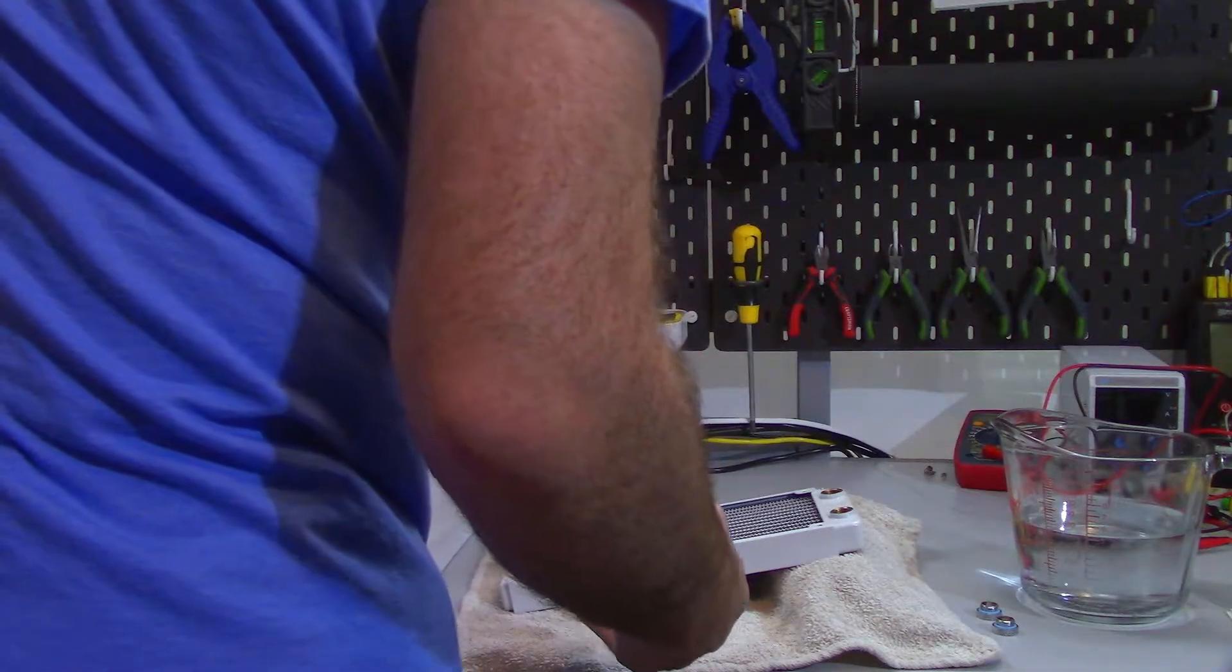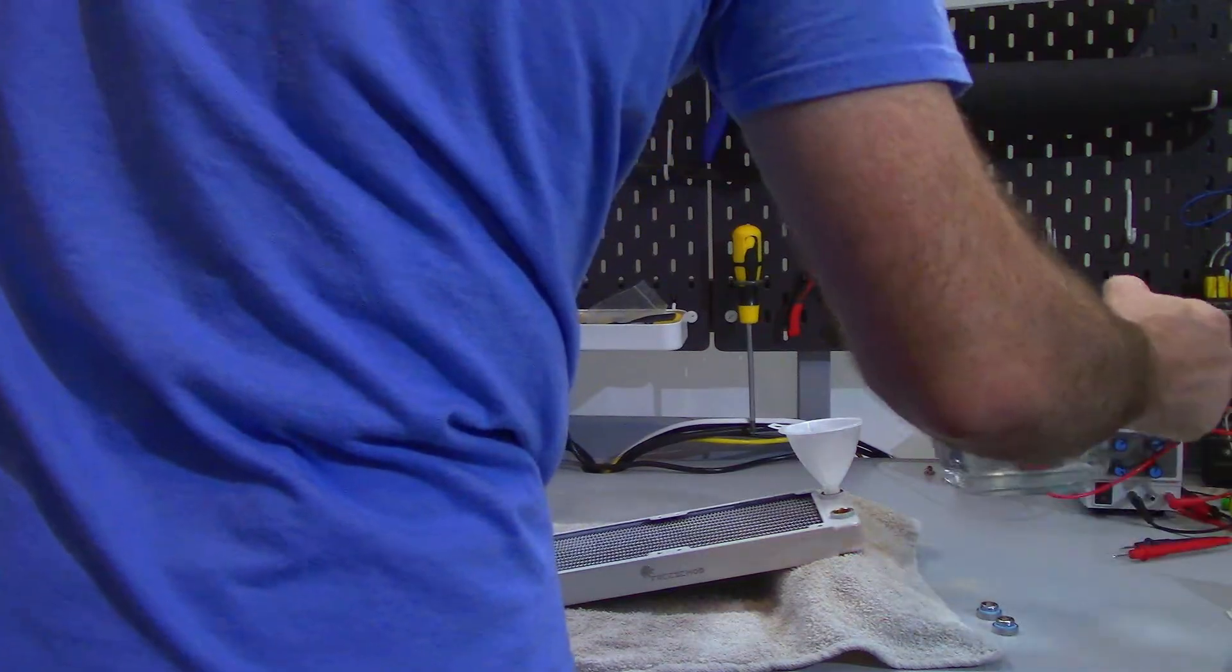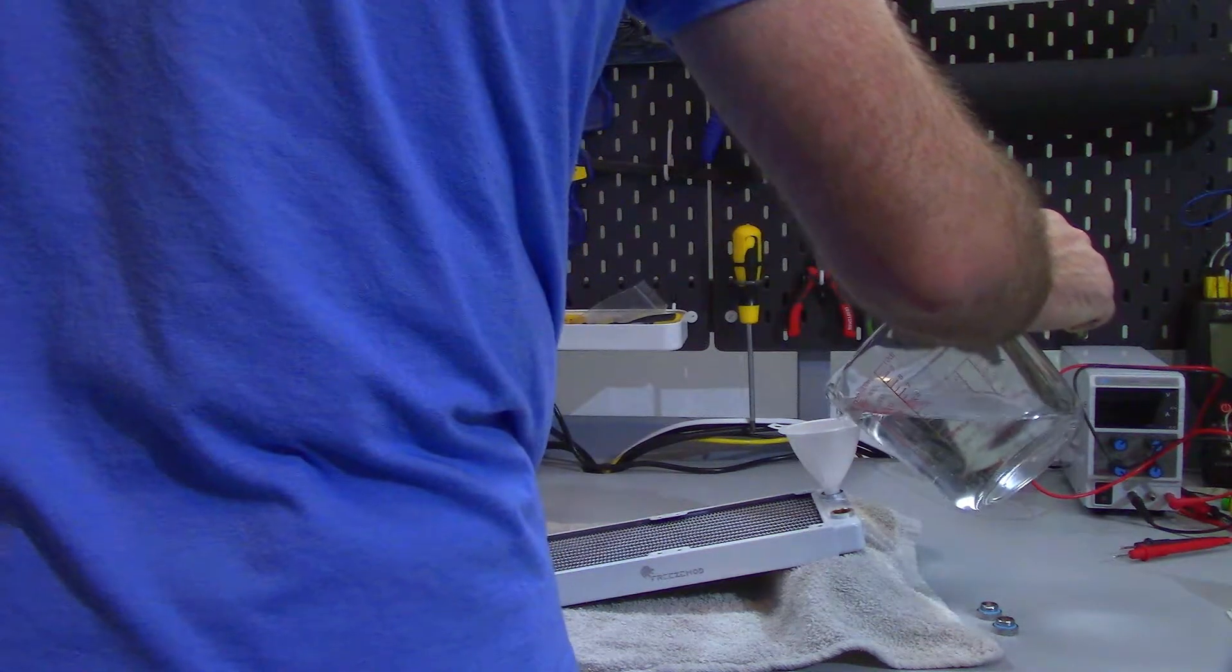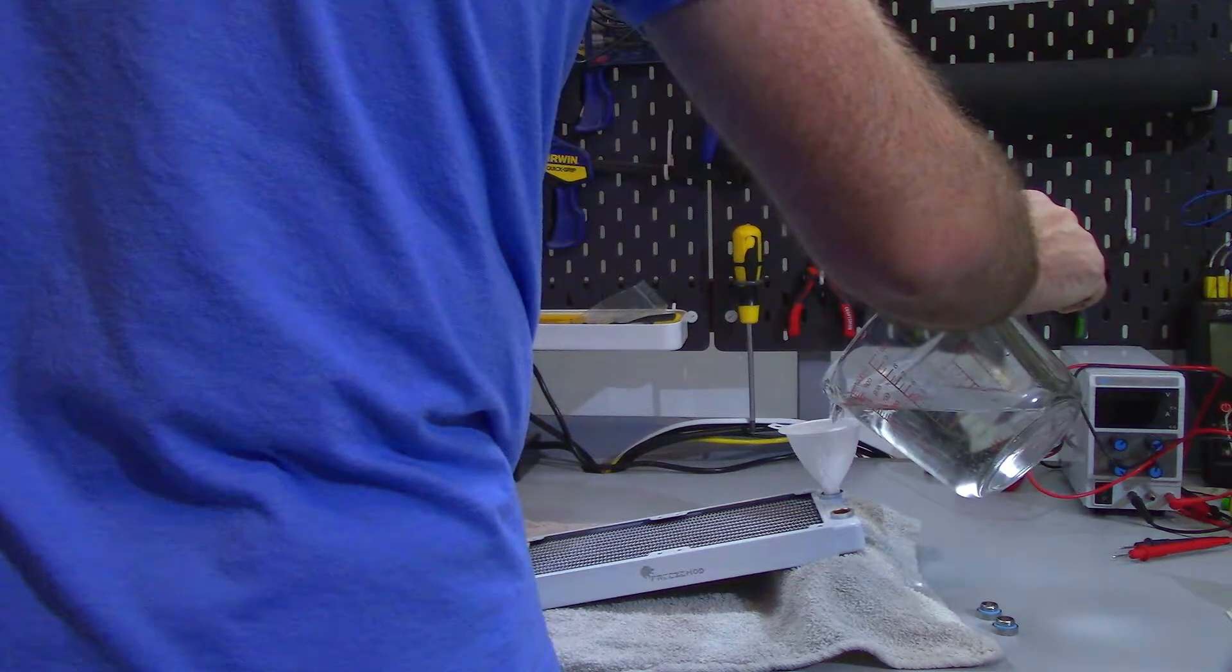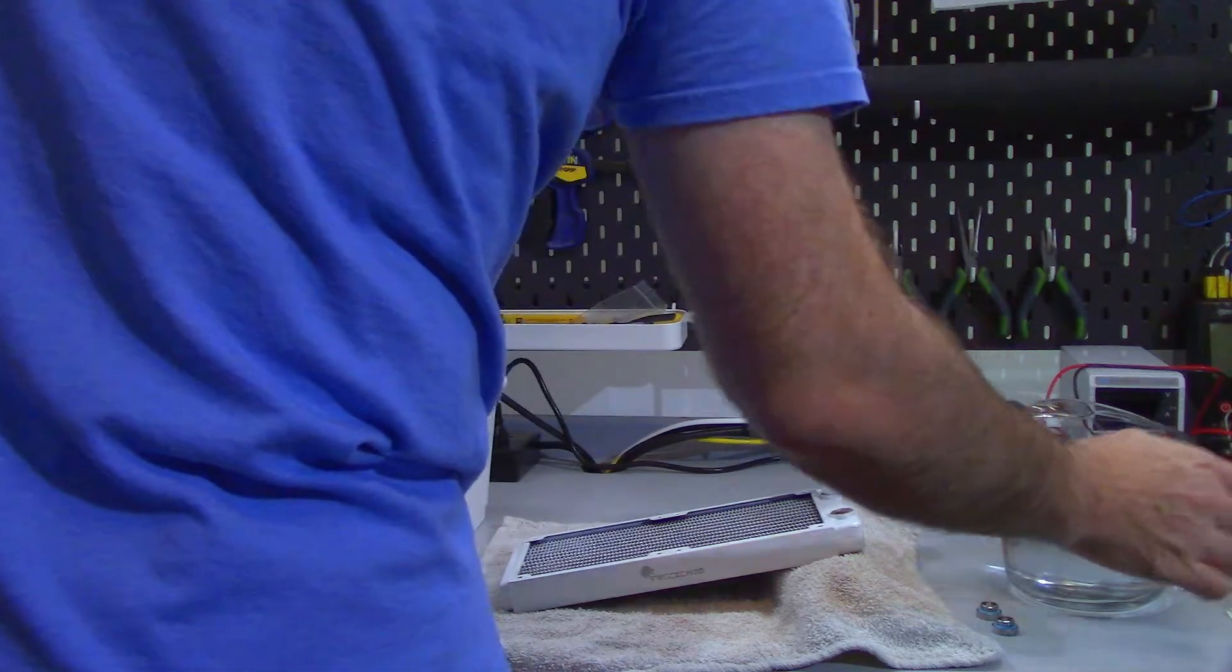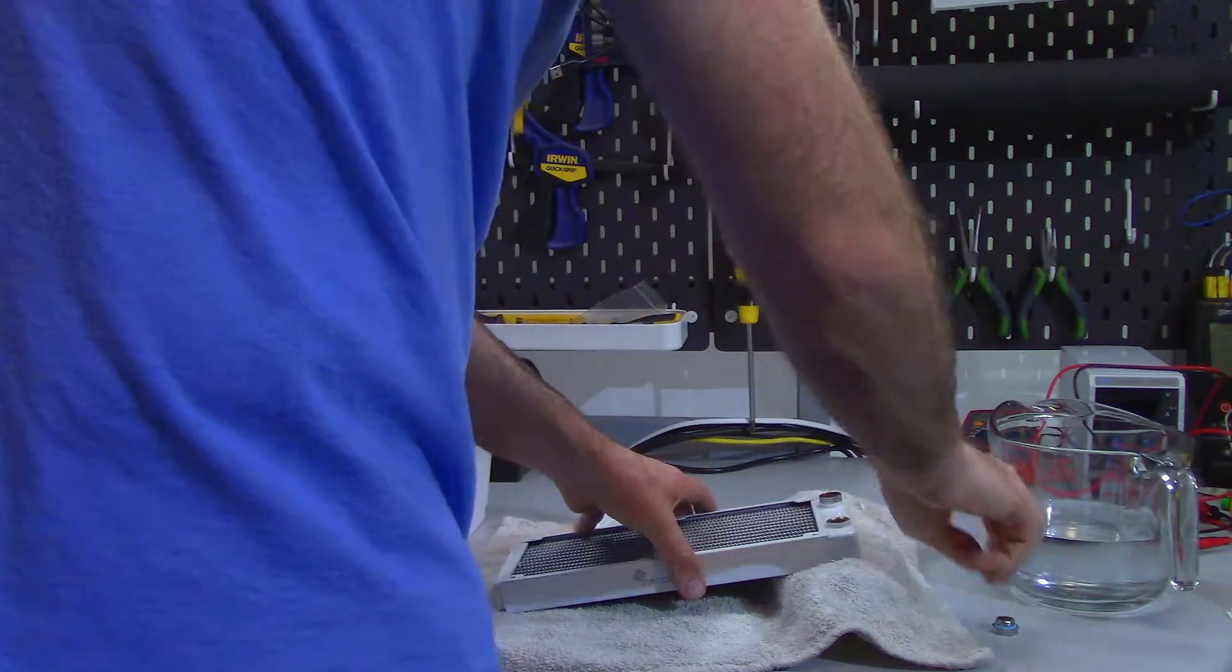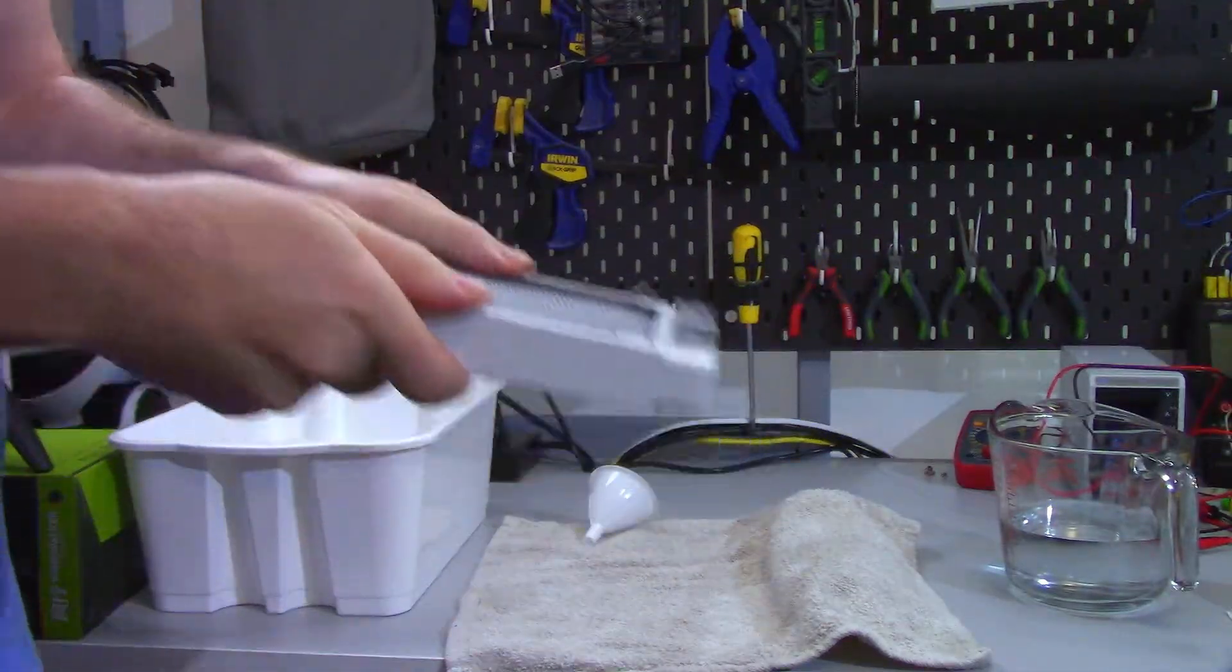Now before you start pouring the mixture into the radiator you should lay down your towels or your rags over your workspace so you don't make a giant mess. I rolled up one of my rags to prop up the fill side of the radiator so when filling the radiator gravity can help me out a little bit here and slowly pour the vinegar mixture into the funnel. Once the radiator is filled I'll screw in both stop plugs then pick up the radiator and give it a good shake for 60 seconds or so.